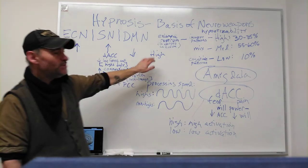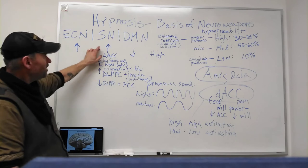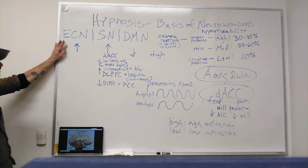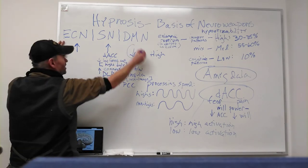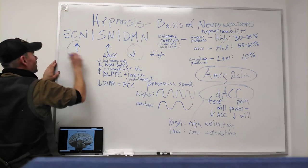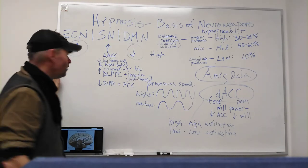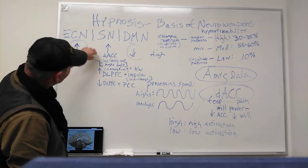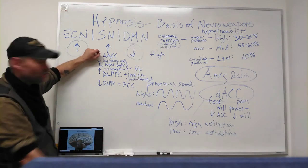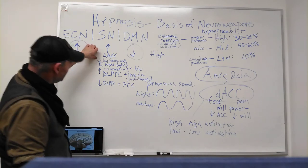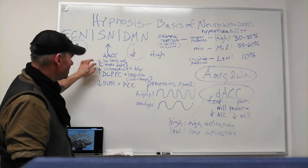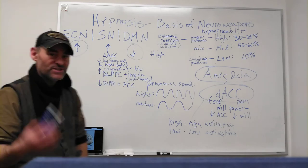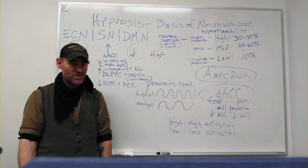Their salience network goes up and the executive control network goes up, but there's a clear differentiation between the default mode network and the executive control network. Now in the salience network which is related to the anterior cingulate cortex, as the frequency amplification of the ACC goes down, but this is only in highs. It's another one of those that only highs show differentiation from the rest of the population.